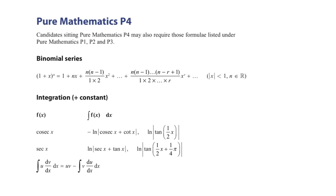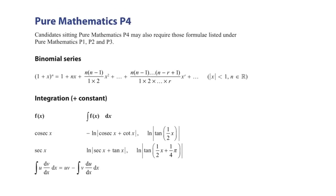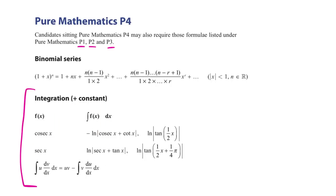This is the formula sheet that you get in Pure 4. Remember that you can also use anything from P1, P2, and P3. Always look at the trig stuff from P3, and you've got some extra integration here. Because you know that integration is the opposite of differentiation, remember we could always go backwards as well.